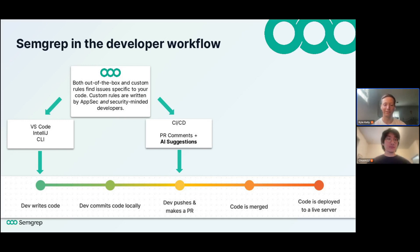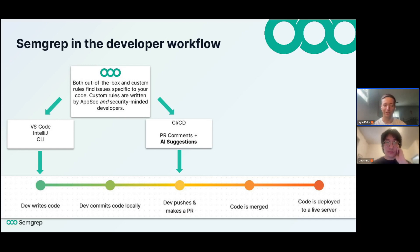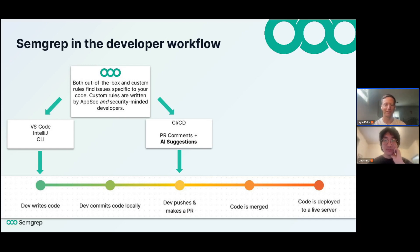The typical developer workflow looks something like this: they write code, commit code locally, push it and make a PR, that code gets merged, and then it's deployed to a live server. Most security products target after the code is merged and pushed to production, or maybe during CI/CD when the dev makes a PR. With shifting left, we want to get as early in that process as remotely possible — in the actual IDE. We have a VS Code integration as well as an IntelliJ integration, and some developers may even want to use the CLI solution to run scans before they even commit locally, using both out-of-box and custom rules.